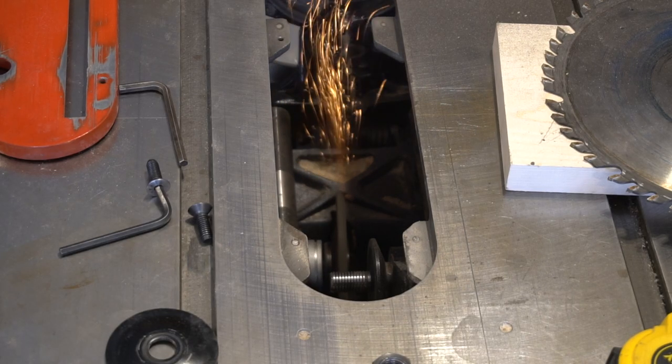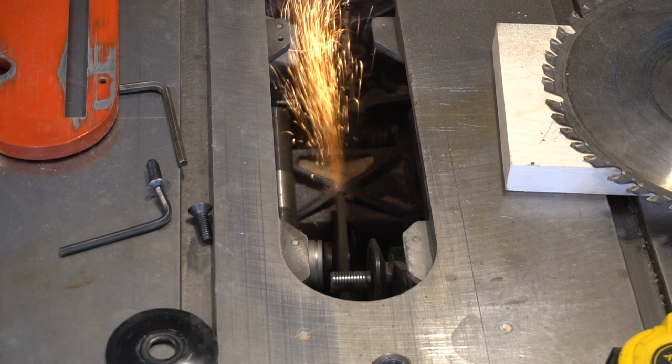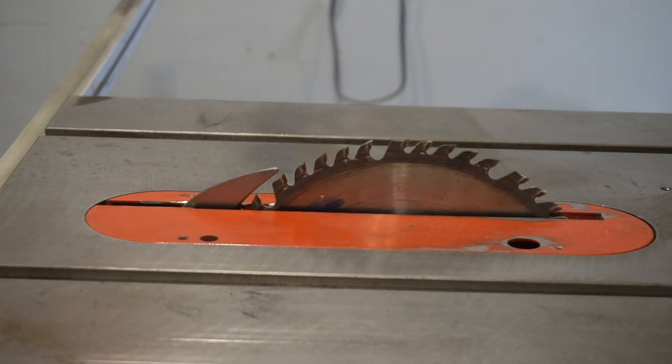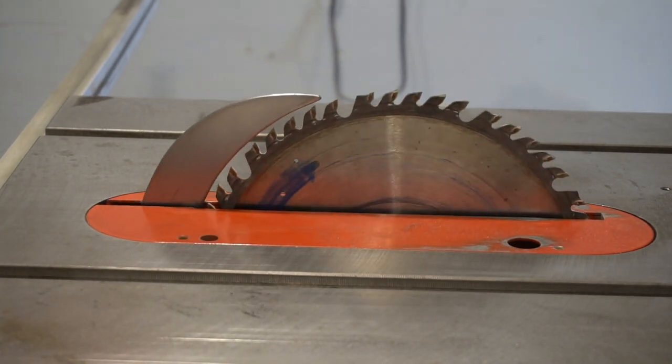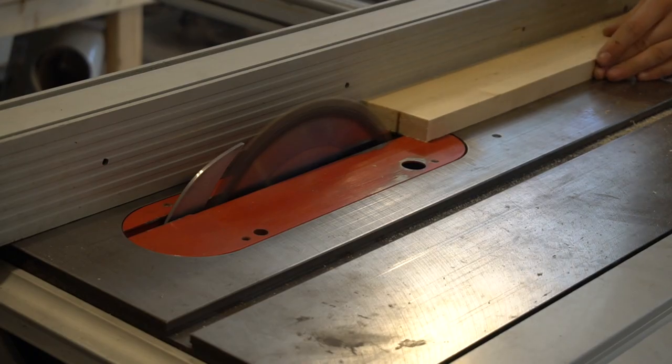I don't think I compromised the integrity of the table saw, but I did have to remove some material off the cast iron to fit the blade down.